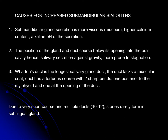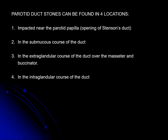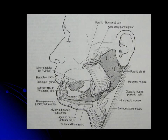Parotid duct stones can be found in four locations: near the parotid papilla opening of Stensen's duct, the submucous course of the duct, the extraglandular course over the masseter and buccinator muscle, and the intraglandular course. Any area in the salivary duct can develop obstruction due to calculi.